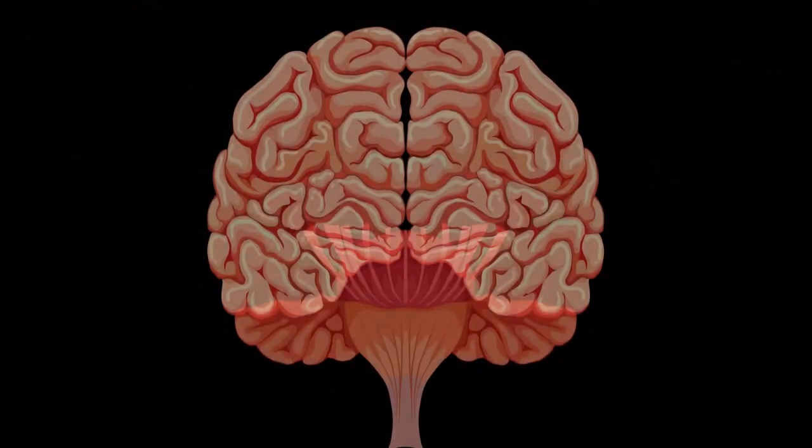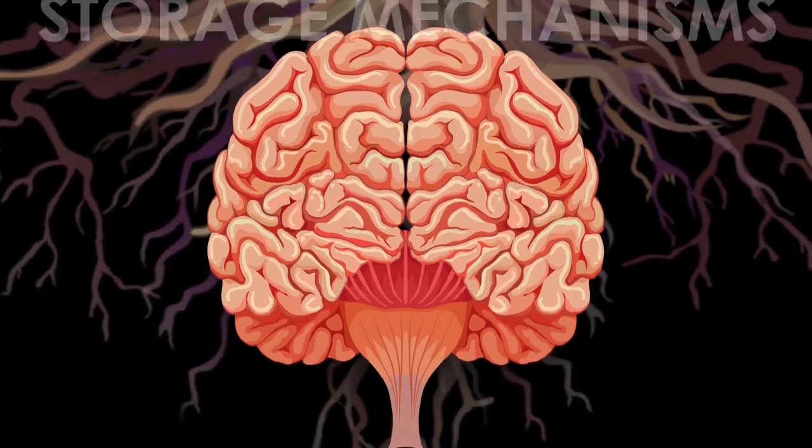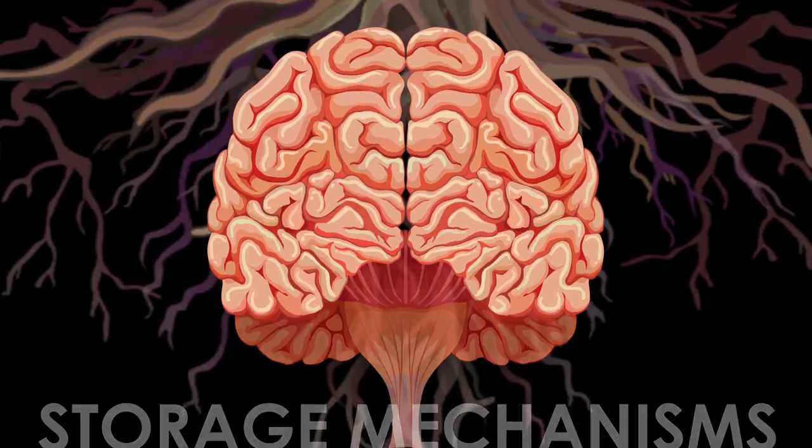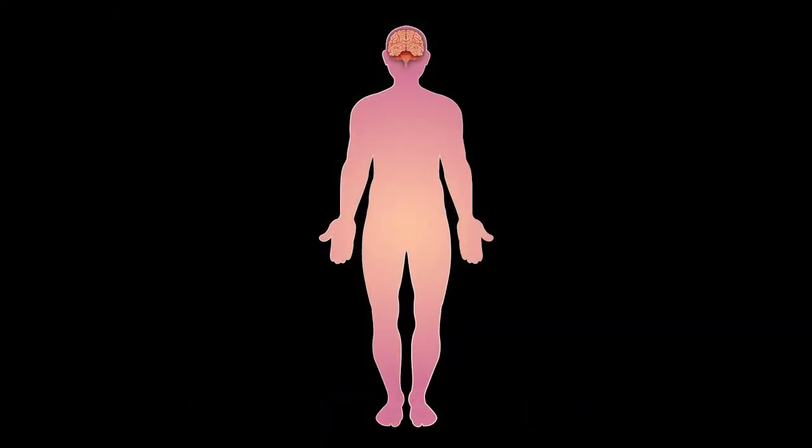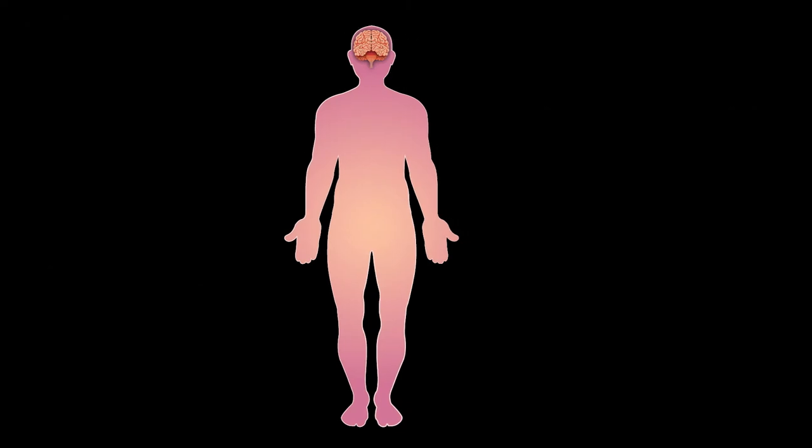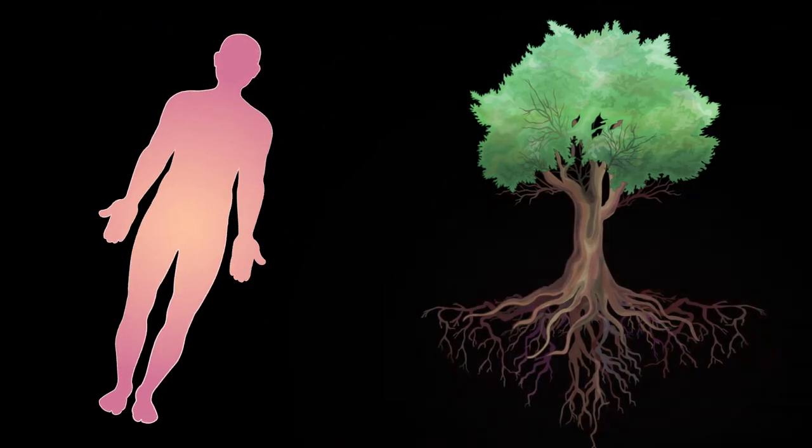Also, the human brain and tree roots are both used as storage mechanisms. Besides that, the human brain is the most important part of the human body and the tree roots are the most important part of the tree.